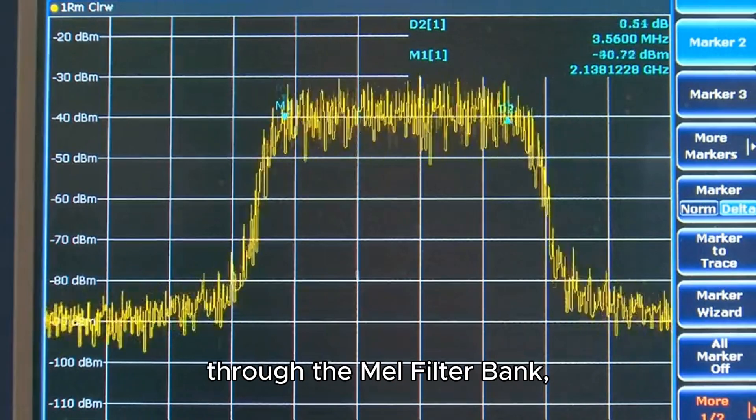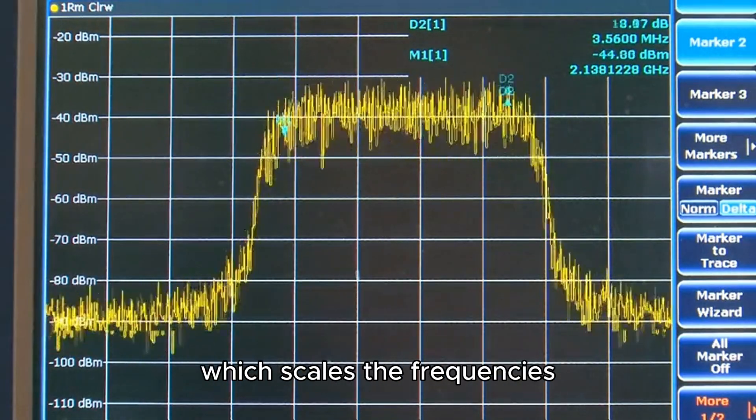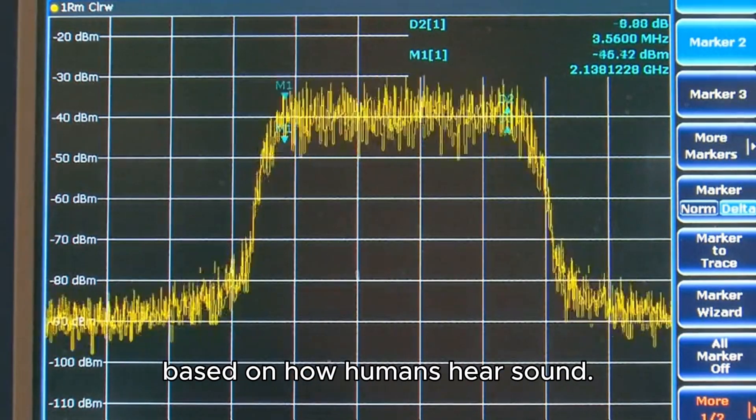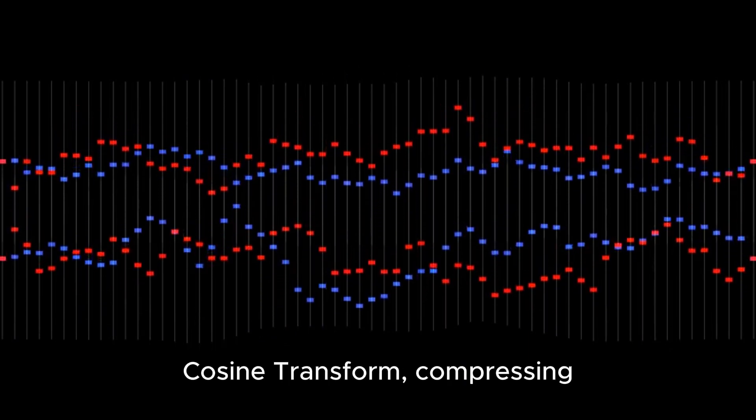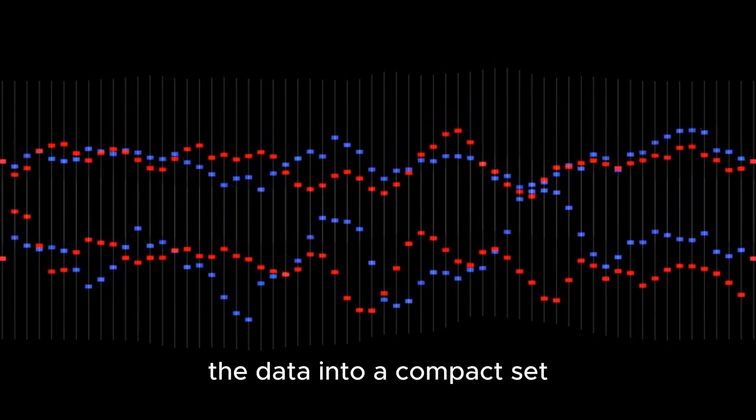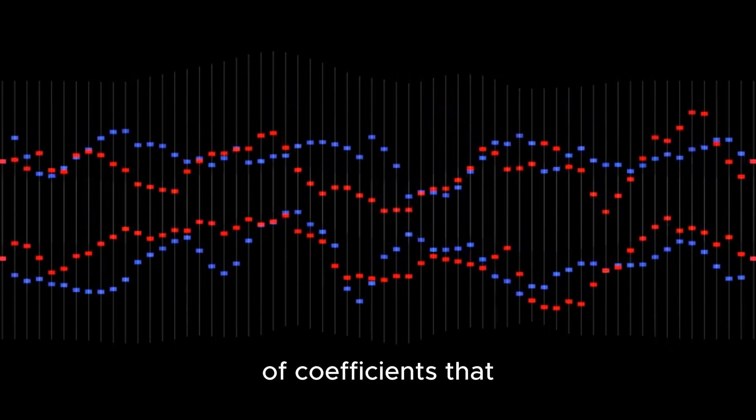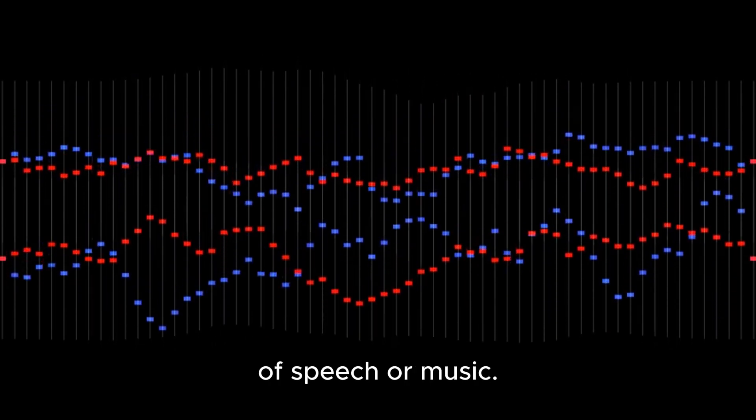The signal is then passed through the Mel filter bank, which scales the frequencies based on how humans hear sound. Finally, the system applies a logarithm and a discrete cosine transform, compressing the data into a compact set of coefficients that represent the unique features of speech or music.